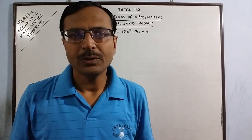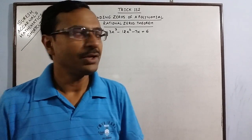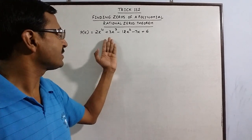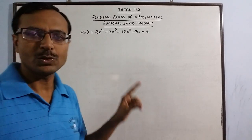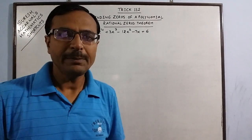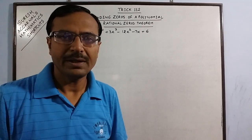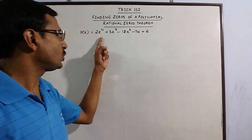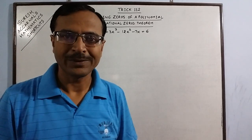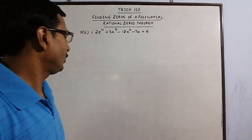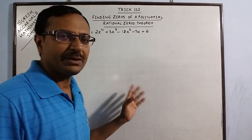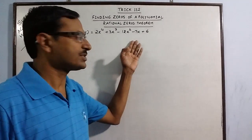Hello students. Today we are going to do a method through which you can find the zeros of a large polynomial. This is a polynomial of degree 4, so it has 4 zeros. The only method taught at school level is hit and trial method, wherein we substitute any value of x and hope the answer comes out to be 0. That takes a lot of time if the zeros are large.